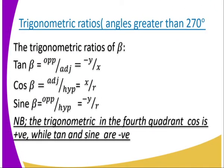We go to the fourth quadrant — this is where we have angles that are greater than 270 degrees. Tan beta is opposite over adjacent, which is negative y divided by x. Cos beta is adjacent divided by hypotenuse, which is x divided by r. And sin beta is opposite over hypotenuse, which is negative y divided by r. In the fourth quadrant, only cos is positive while tan and sin are negative.